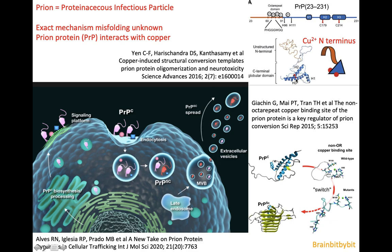This is the normal structure of a prion, with two spirals and a very long unstructured terminal. What is known is that copper plays a key part in the folding of this prion, so there are many research articles looking into copper metabolism. There has even been one case report of a patient with both Wilson's disease and Creutzfeldt-Jakob disease.